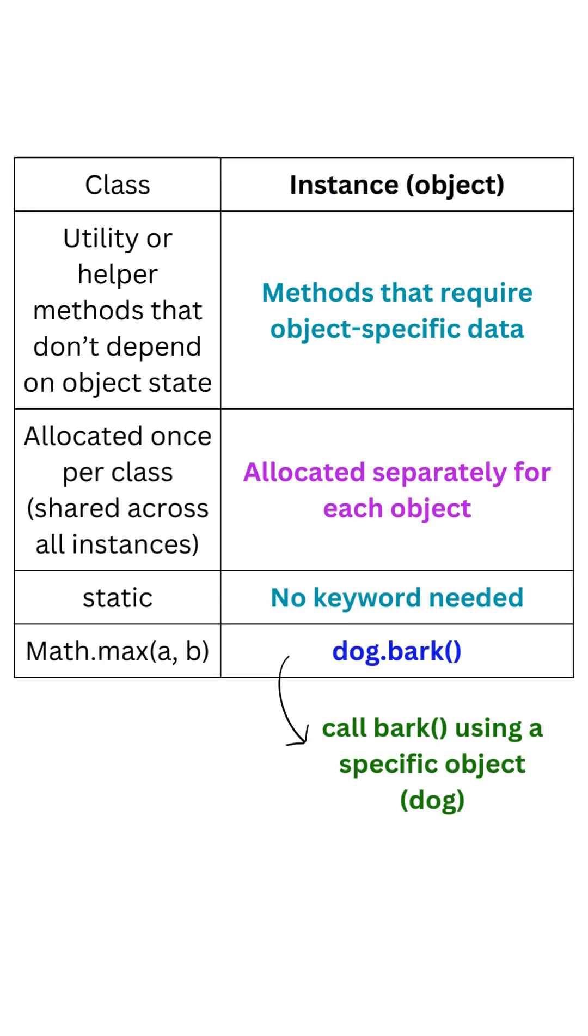Instance methods require object-specific data. Allocated separately for each object. No keyword needed. Example dog.bark.